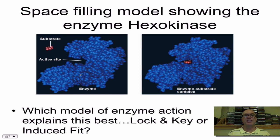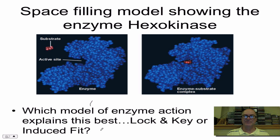This is an enzyme called hexokinase, and a model built based on what we think it really looks like at an atomic or molecular level. Hexokinase has a substrate called a hexose — any 6-carbon sugar — and notice how it fits in this groove or active site. Notice what happens: the active site actually clamps down on the substrate, stressing it. That would be the induced fit model. Notice the shape change in the active site.